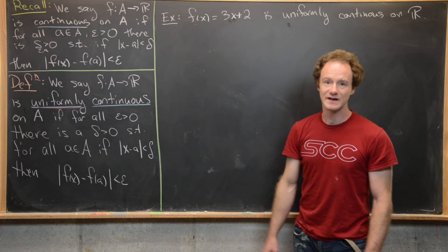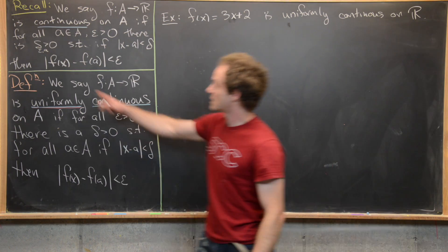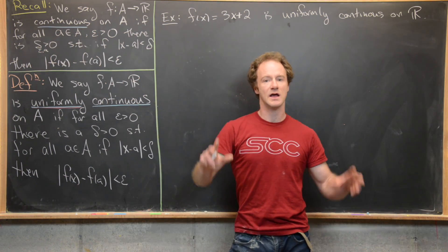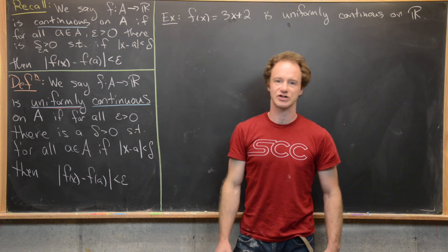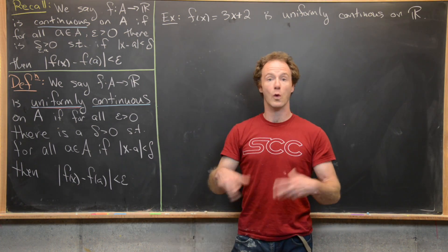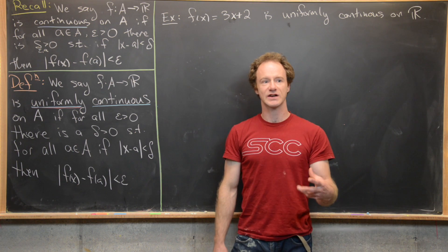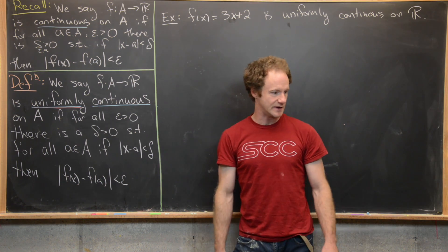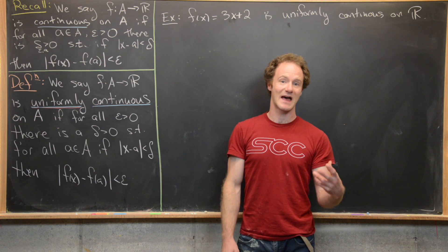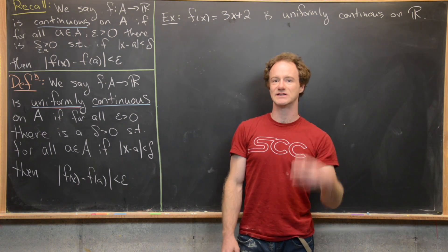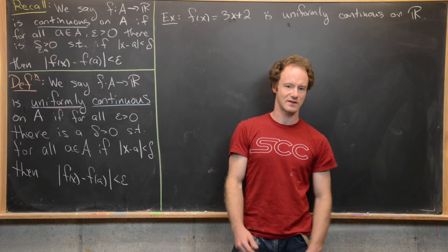The really important thing to notice here is that this delta is going to depend on the choice of epsilon and whatever point you're working at. So if I'm trying to show continuity at maybe the point seven, it's important that delta takes into account that I'm working at seven versus at the point one.